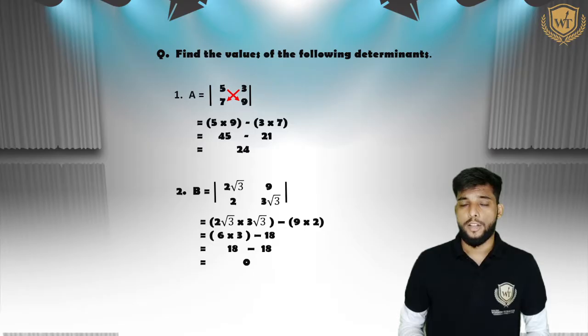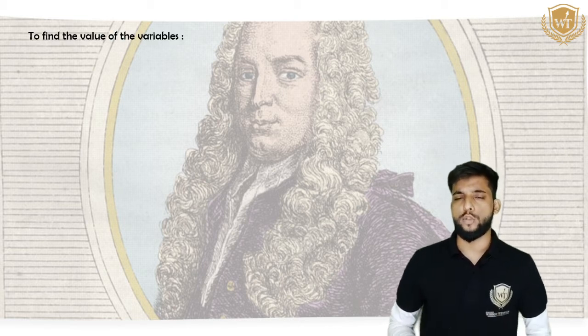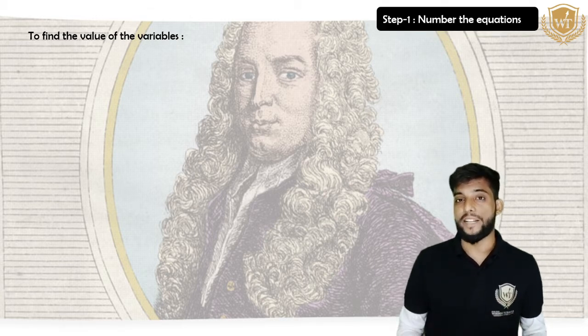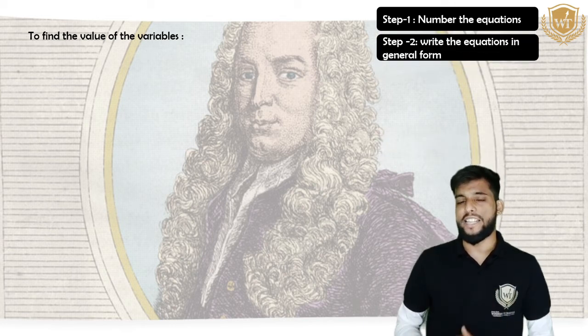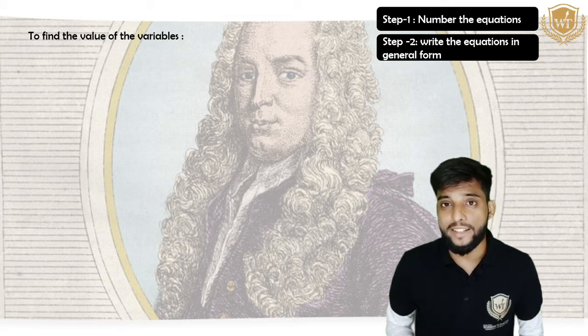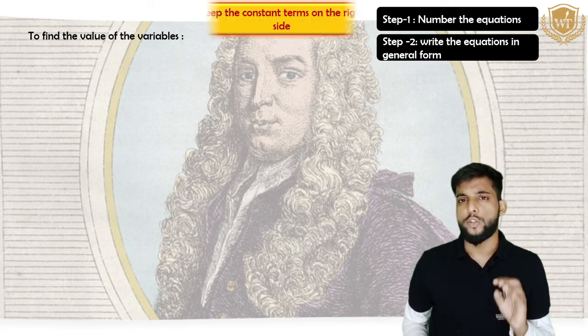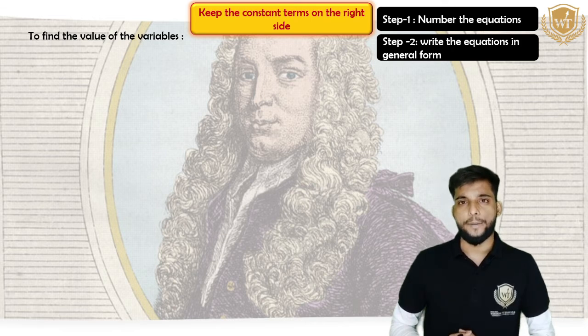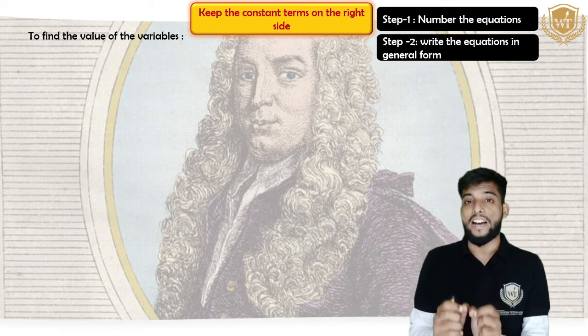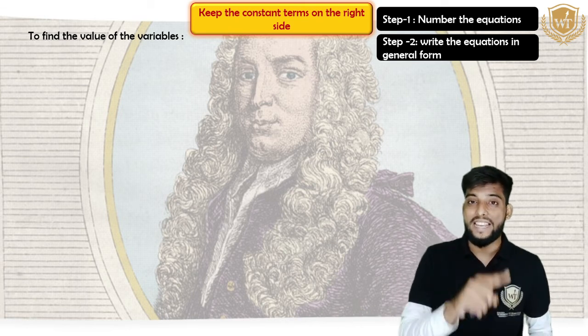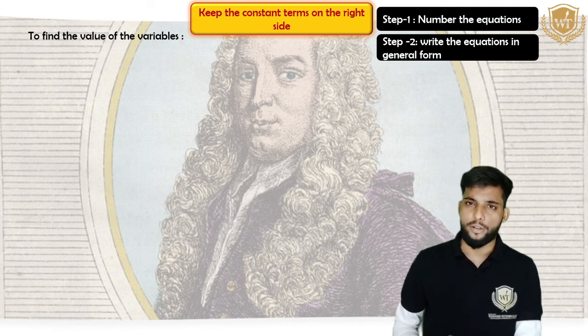Now let us use this determinant in Cramer's Rule to find the values of X and Y. There are five steps. Step number one is numbering the equations. Step number two is writing both the equations in general form. The general form for Cramer's Rule is AX plus BY equals to C, keeping the constant term on the right-hand side.